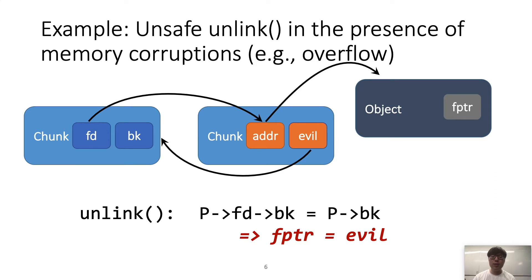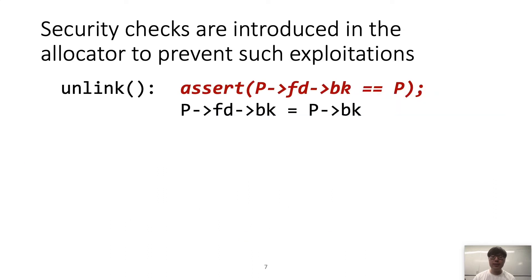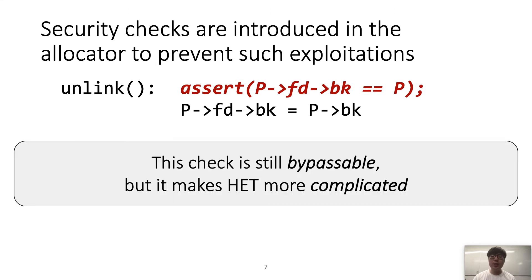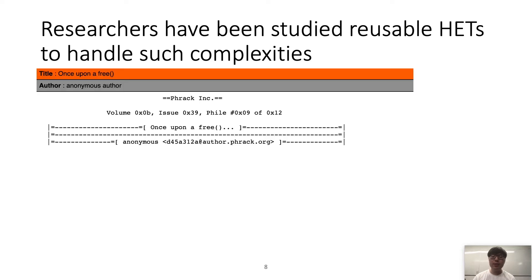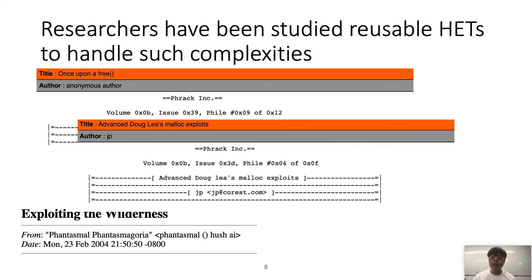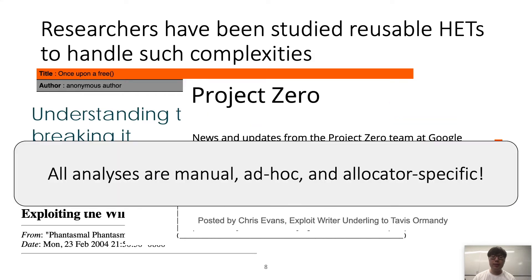This technique is called unsafe unlink. To prevent this, ptmalloc2's developers added a security check to ensure that the object has a legitimate form. However, this check is still bypassable, but it makes heap exploitation techniques more complicated. To handle such complexities, researchers have studied reusable heap exploitation techniques, starting from the famous Phrack magazine article 'Once Upon a Free.'